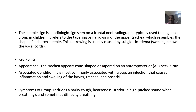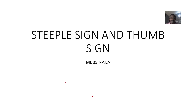Stipple sign is associated with croup, which is an infection causing inflammation of the larynx — laryngotracheobronchitis. Symptoms include a barking cough, hoarseness of the voice, stridor with a high-pitched sound when breathing, and sometimes difficulty breathing. That concludes the discussion of the stipple sign and the thumb sign.